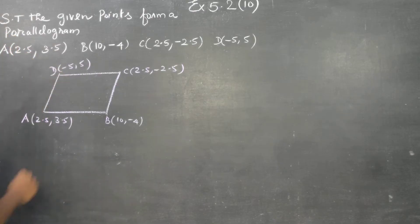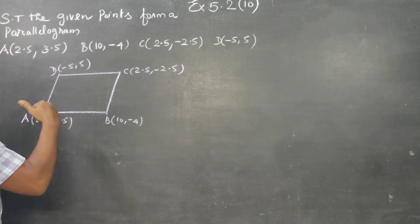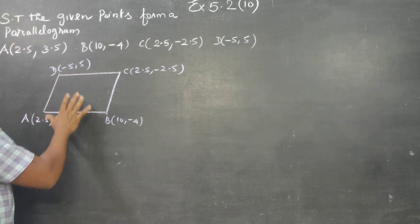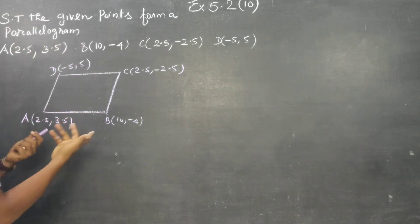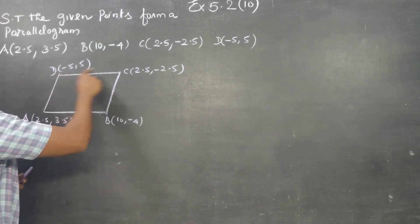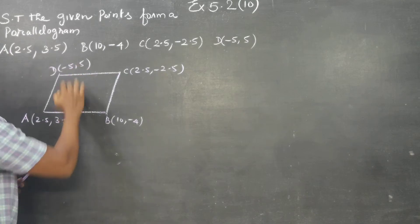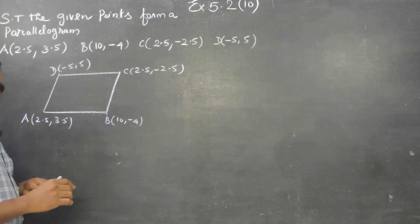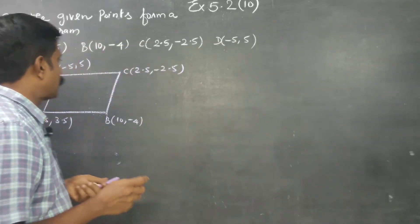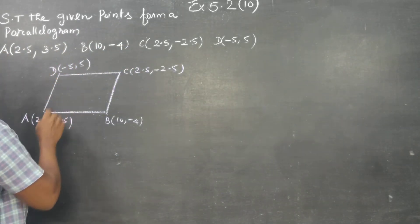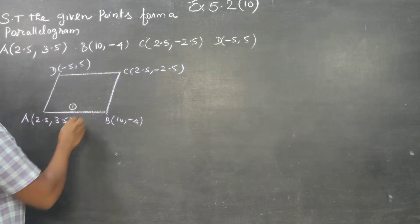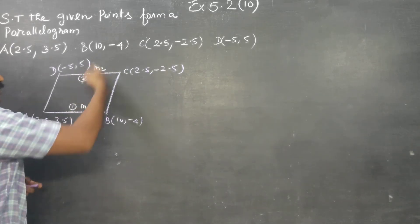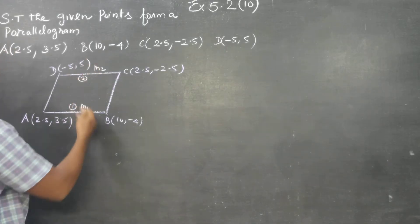It is a parallelogram. Since it is a parallelogram, what should we prove to show that it is a parallelogram? We have to check: AB and DC are the same and parallel, AD and BC are the same and parallel. If slopes are equal, the lines are parallel. So we check slope of AB is M1, slope of DC is M2, and verify M1 equals M2.